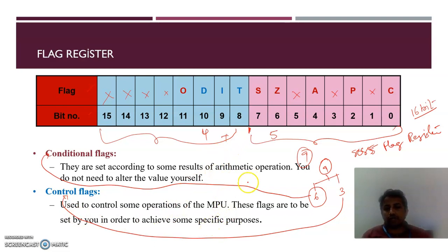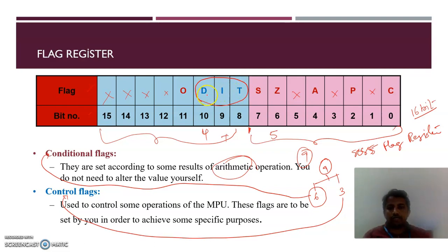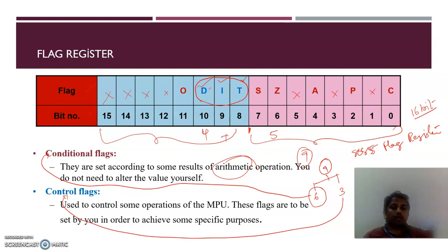Conditional flags are set or reset — either 0 or 1 — depending on the arithmetic operation. When you add, subtract, multiply, or perform any arithmetic operation, the value of these flags is set or reset according to the type of flag. The 3 control flags are the D flag (direction flag), I flag (interrupt flag), and T flag (trap flag), which control the operations of the 8086 microprocessor.